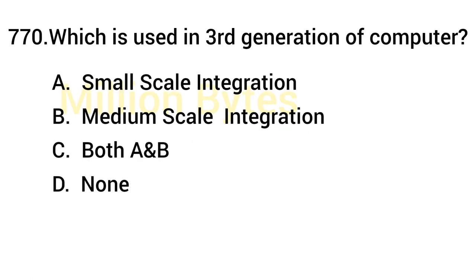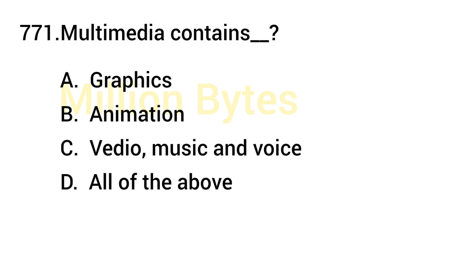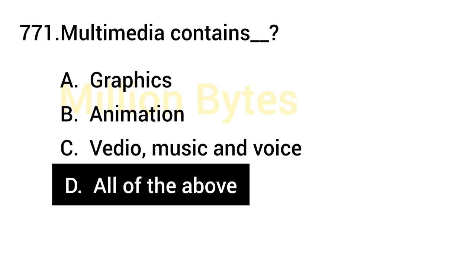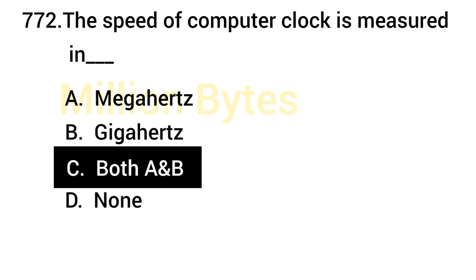Which technology is used in the third generation of computers? Answer is both Small Scale Integration and Medium Scale Integration. Multimedia contains various media types. Speed of a computer clock is measured in both Megahertz and Gigahertz.